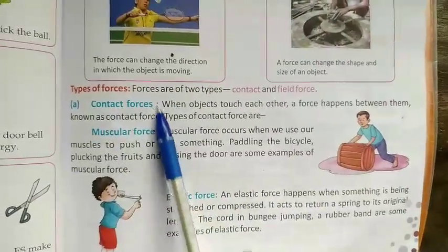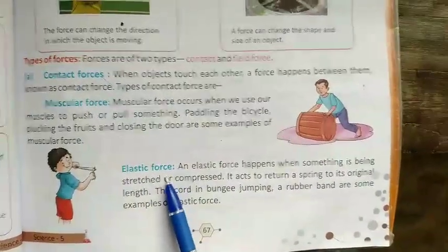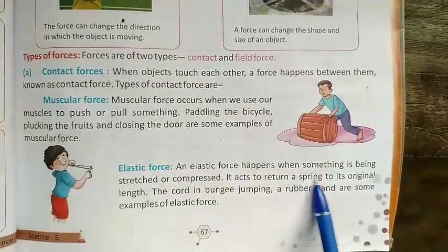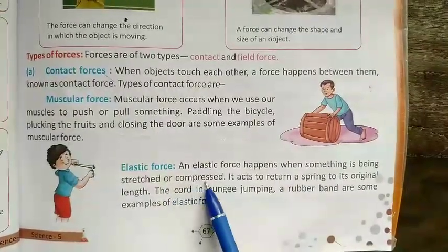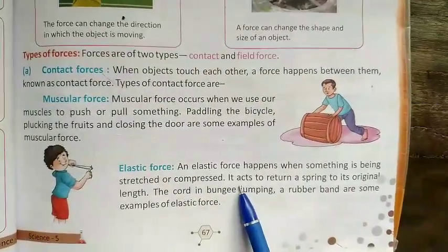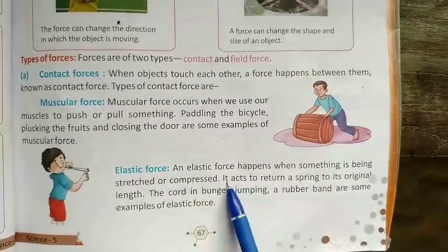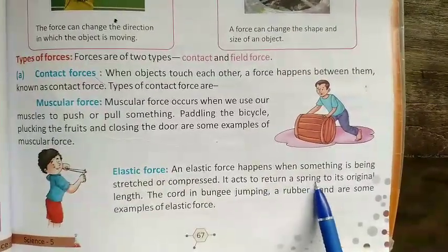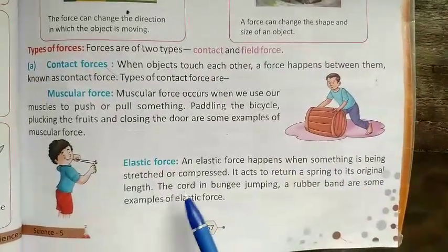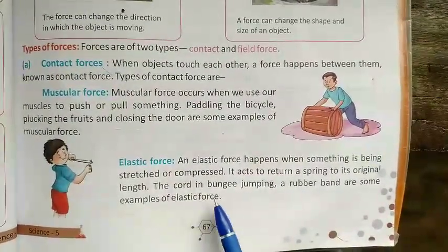Next is elastic force. An elastic force happens when something is being stretched or compressed. It acts to return a spring to its original length. The cord in bungee jumping and a rubber band are some examples of elastic force.